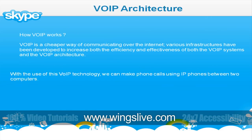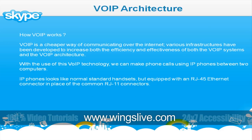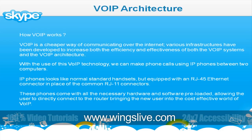With VOIP technology, we can make phone calls using IP phones between two computers. IP phones look like normal standard handsets, but they are equipped with an RJ45 Ethernet connector in place of the common RJ11 connectors. These phones come with all the necessary hardware and software preloaded, allowing the user to directly connect to the router, bringing the new user into the cost-effective world of VOIP.